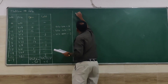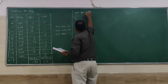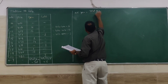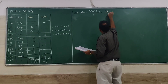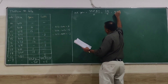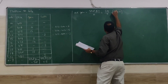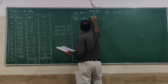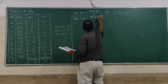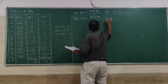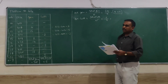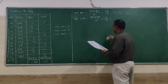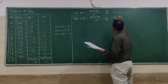Now calculate the average gain: total gain divided by n, which is 52 divided by 9, giving an average gain of 5.77 rupees. Next, average loss equals total loss divided by n, which is 6 divided by 9, giving an average loss of approximately 0.66 or 0.67 rupees per day.